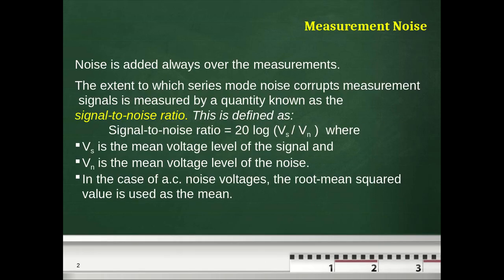Noise is added to almost every measurement due to various sources that corrupt the measurement signal. We use a quantity called the signal-to-noise ratio (SNR), which is equal to 20 log of the source voltage over the noise voltage. This applies to AC noise voltage, where the root mean square is used as the measure of the ratio between signal and noise.